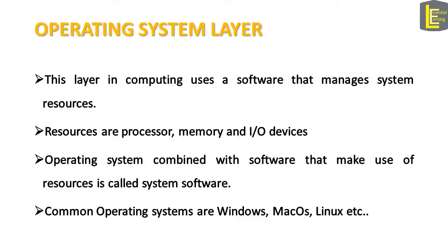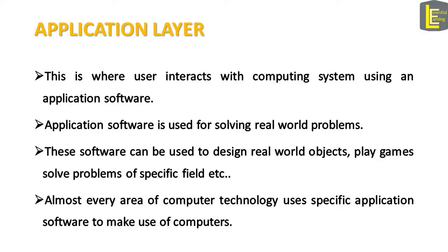The fourth layer in the computing system is the operating system layer. This layer uses a software that manages system resources — called the operating system. Examples of resources can be the processor, memory, and I/O devices. The operating system, combined with other software that manages resources, is called system software. Common operating systems in use are Windows, Mac OS, Linux, and others.